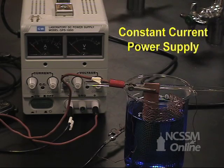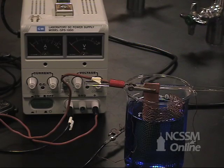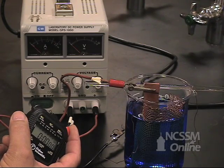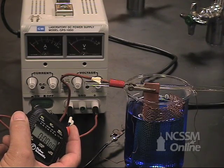Our power supply is a constant current power supply. We'll adjust the voltage, and it will provide a constant current over the period of time that we're doing the electrolysis. The power supply will provide a constant current, and we'll read that current from the meter.